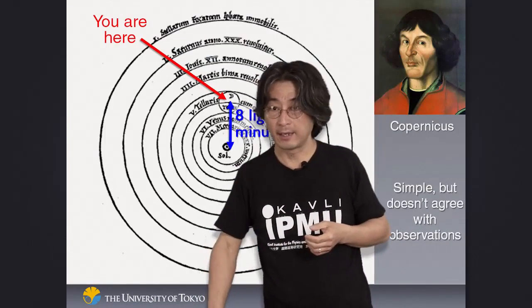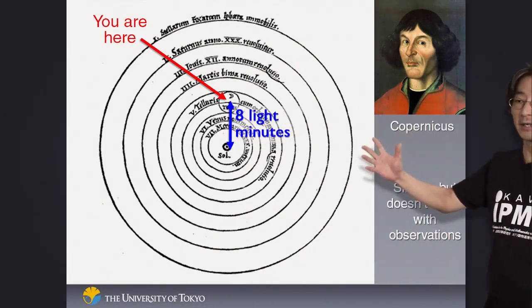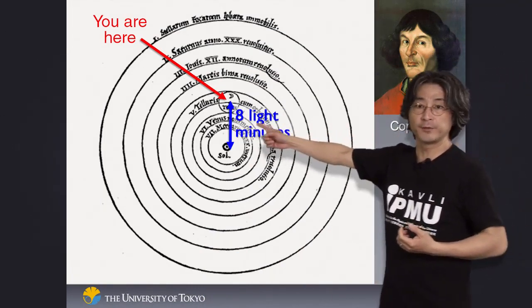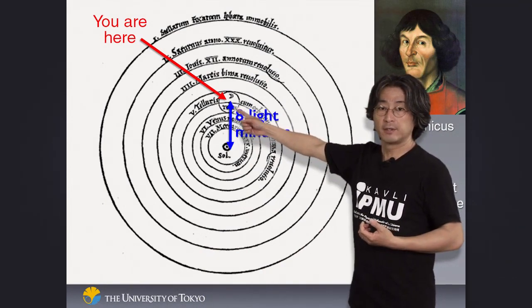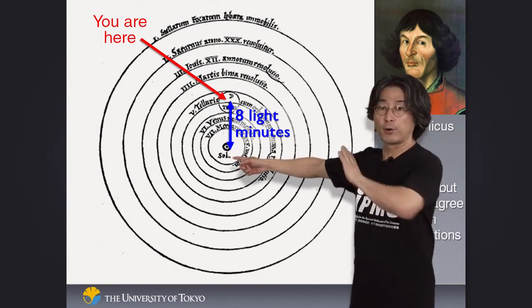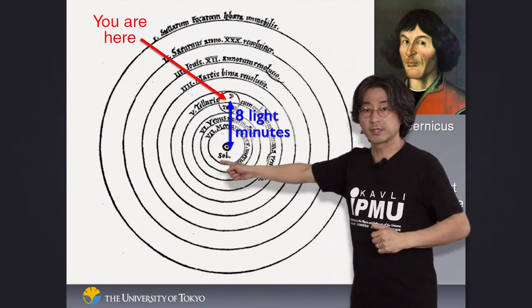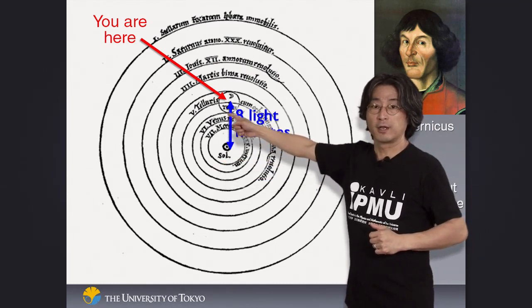That's when, as you know, Copernicus came in. He completely changed the idea. We are not at the center of the universe. We are off-centered now. The center of the universe is actually the Sun. He proposed that all the planets move in complete circles around the Sun instead of around the Earth.